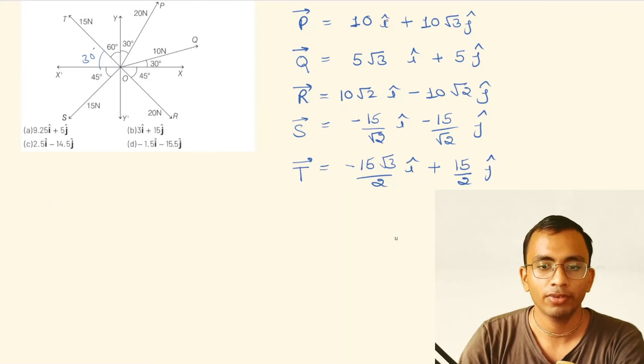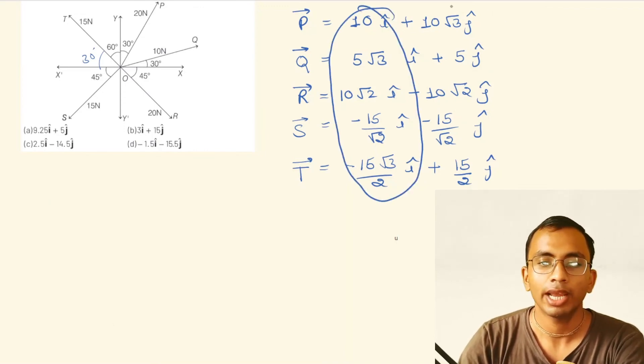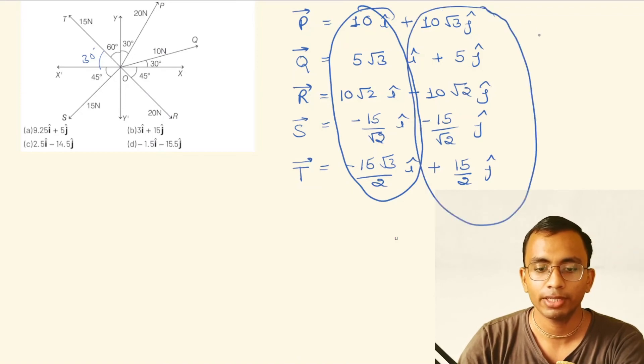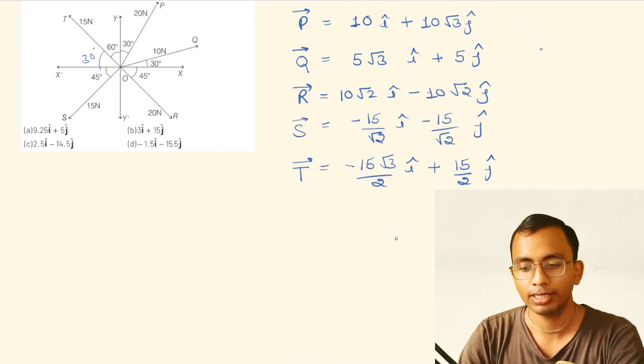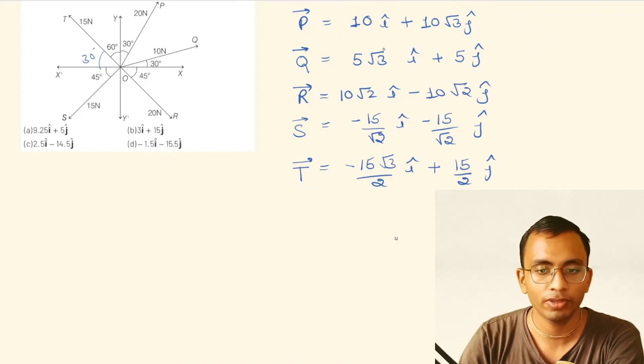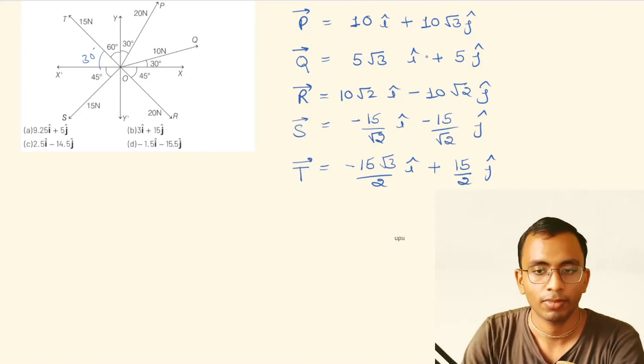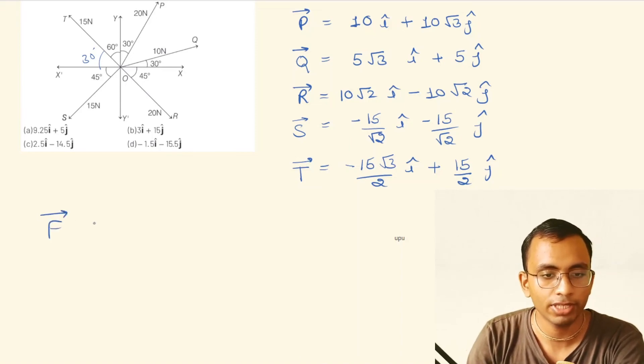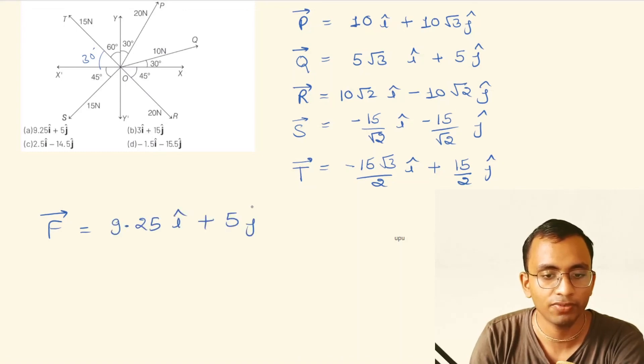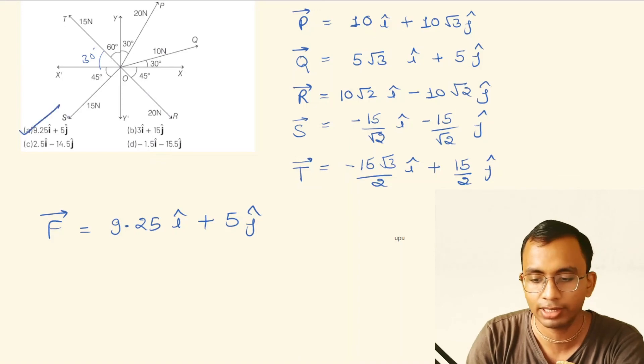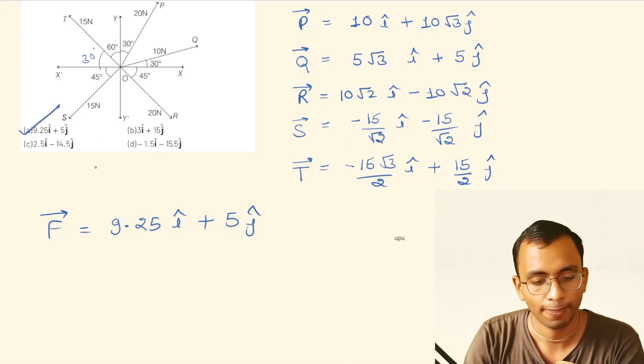Now we can add all the î components together and all the ĵ components together to get the resultant. You can put the values of √3 and √2 here. If you add all these together, the resultant force comes out to be 9.25 î + 5 ĵ. So the option is B.